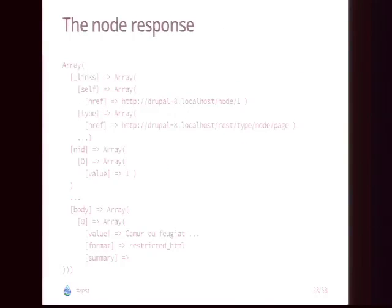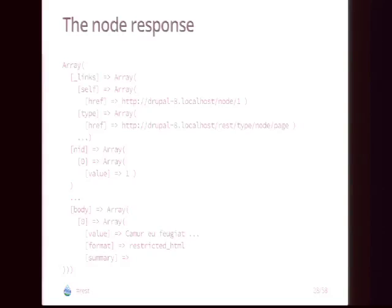The response looks like this: there's a links section in HAL that refers to what the resource is and where it can be found — node 1 in our case. Then it lists all the properties of that node, for example the node ID and all fields like the body field with the body value and format. That's all you have to do in Drupal 8 to get nodes out of Drupal.